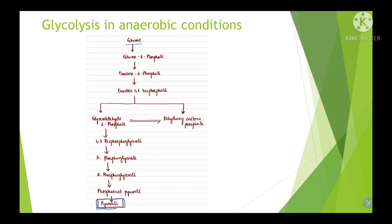After glucose is converted into pyruvate, this pyruvate gets converted into lactate in the presence of the enzyme lactate dehydrogenase. This reaction mainly occurs in the absence of oxygen or in the absence of mitochondria, because there is no further scope for utilization of the pyruvate molecule. If oxygen or mitochondria is present, pyruvate will enter the Krebs cycle or get oxidized to produce energy. In the absence of oxygen or mitochondria, pyruvate gets converted into lactate by lactate dehydrogenase.